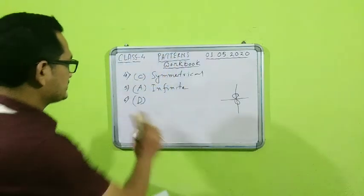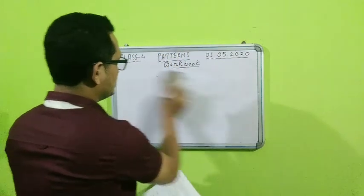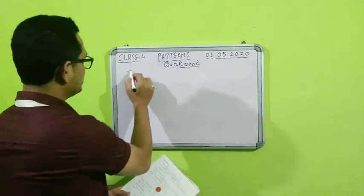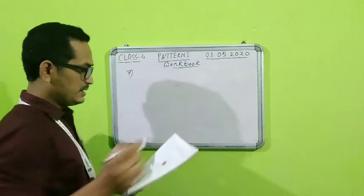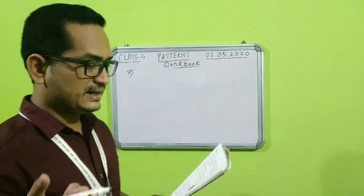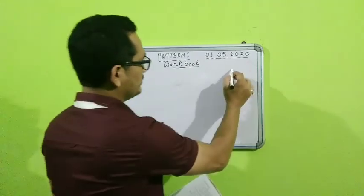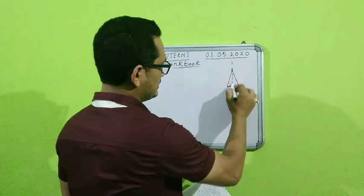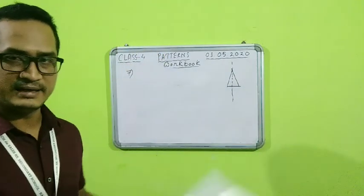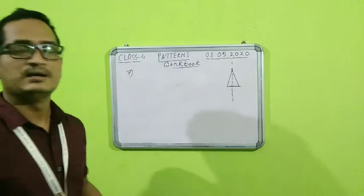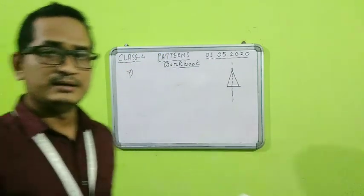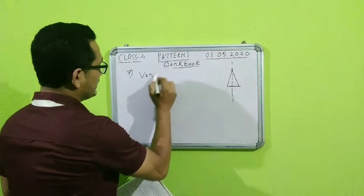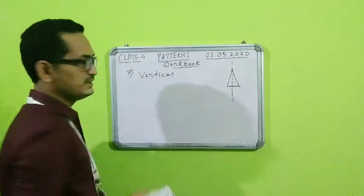Now let us come to the fill in the blanks — question number 7. The figure has a blank line of symmetry. We can say it is a vertical line of symmetry, so the answer will be vertical.